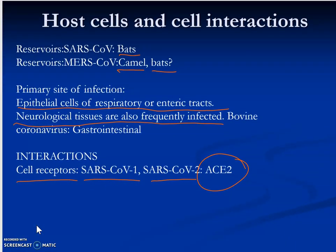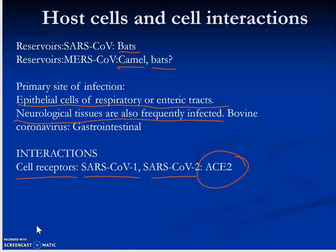Regarding host cells and cell interactions: the reservoirs for SARS-CoV are bats. For MERS, the Middle Eastern Respiratory Syndrome, reservoirs include camels and also bats. The primary site of infection is the epithelial cells of the respiratory or enteric tracts, or neurological tissues — though for the most part it is the respiratory tract that is infected.